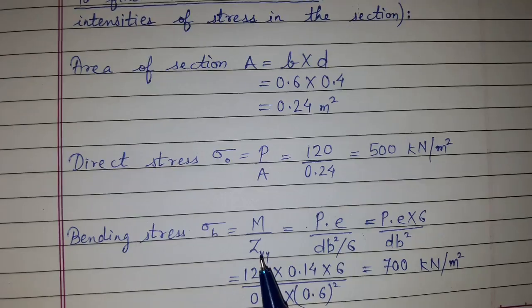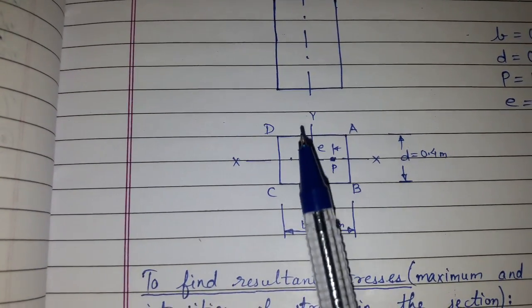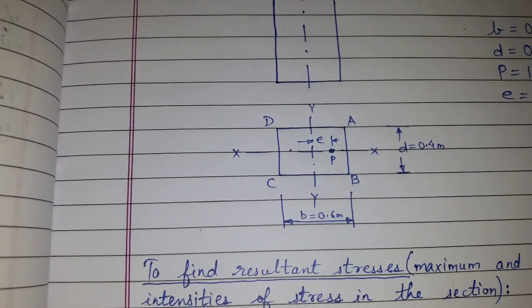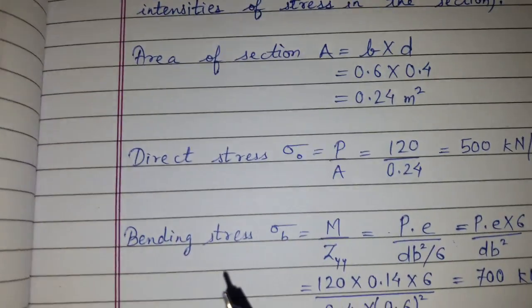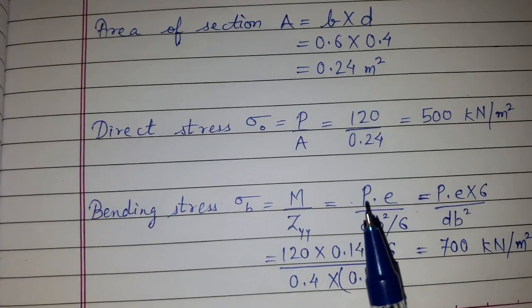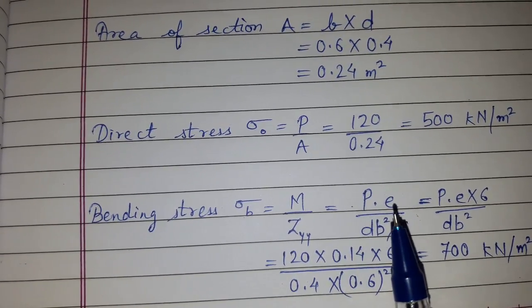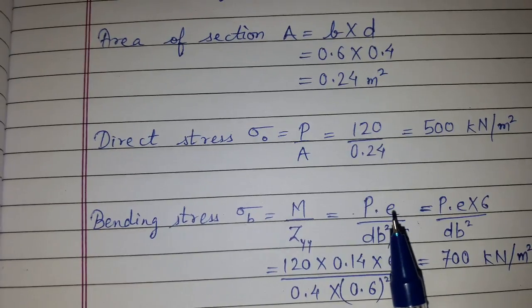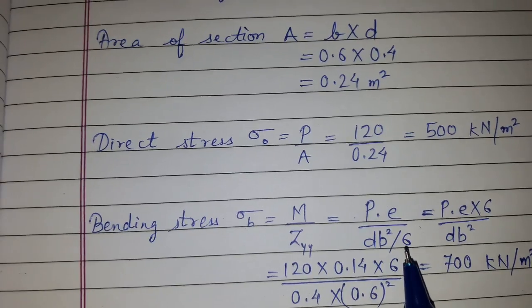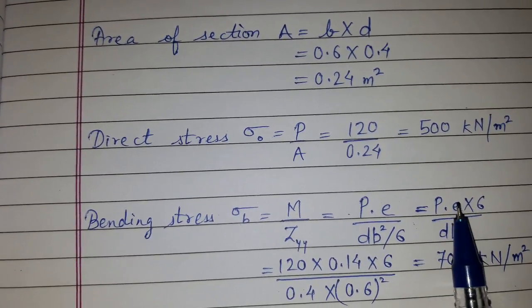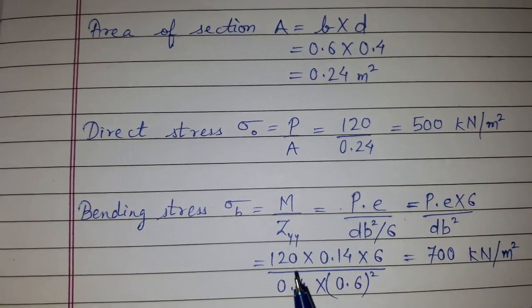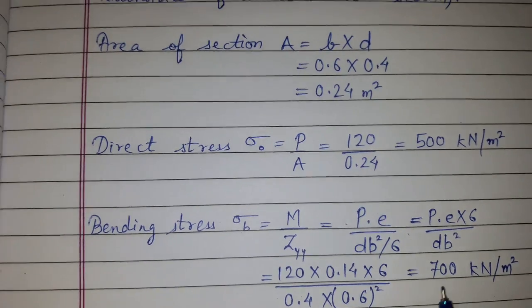Bending stress sigma B is equal to M upon ZYY. It is given that eccentricity is with respect to YY. That is why we need to find ZYY. M upon ZYY, and we know M that is moment equals P into E, that is the force into eccentricity upon ZYY equals dB square upon 6. The 6 came in the numerator, so P into E into 6 upon dB square. We put all the values and we got 700 kN per meter square.